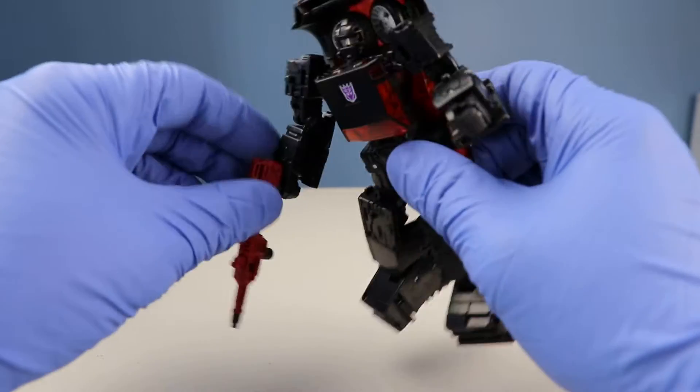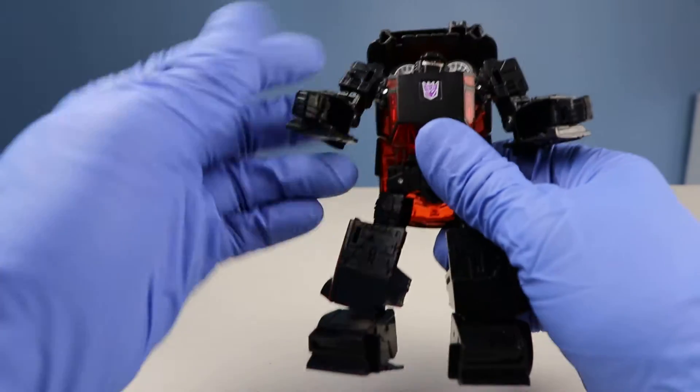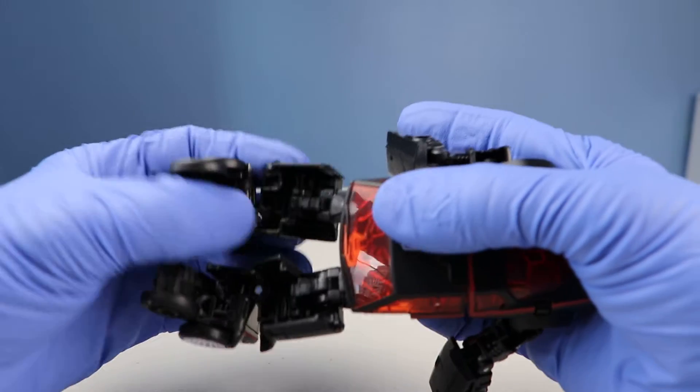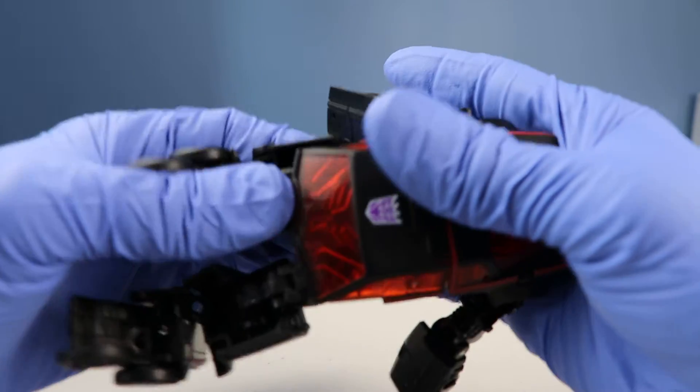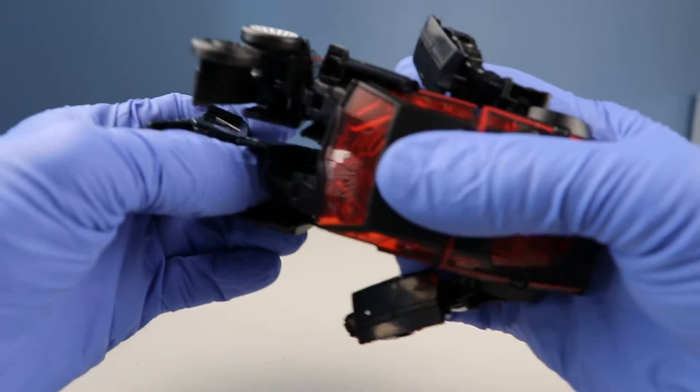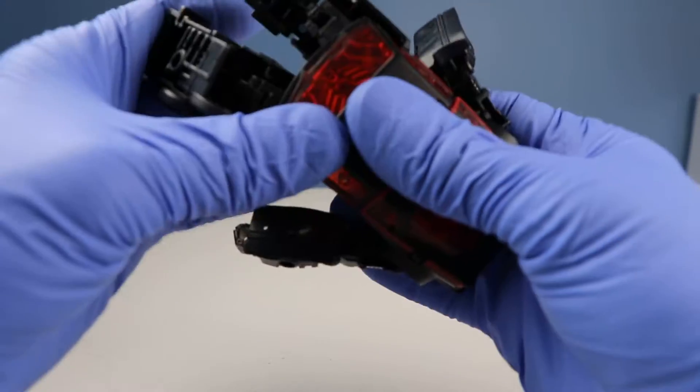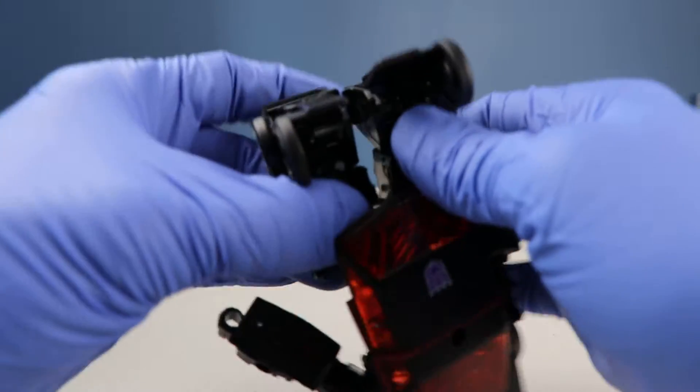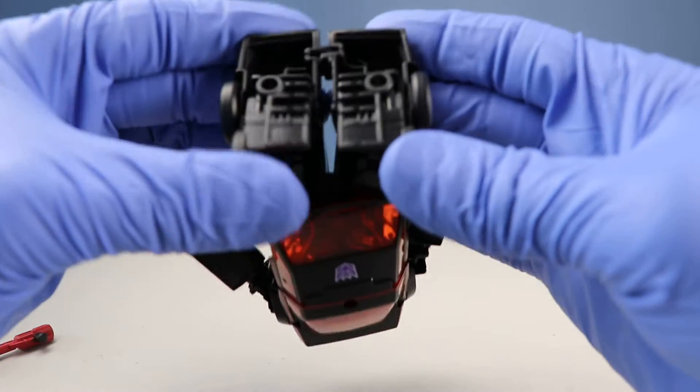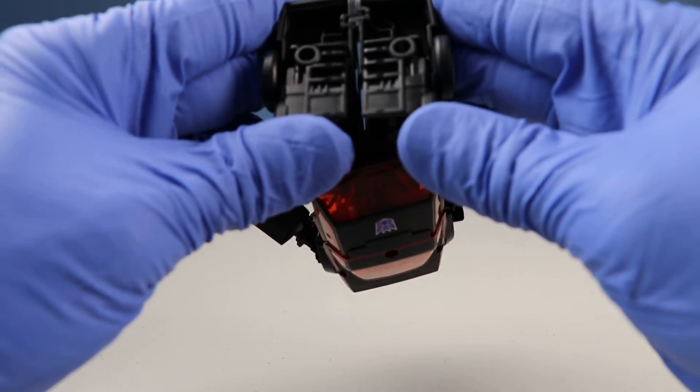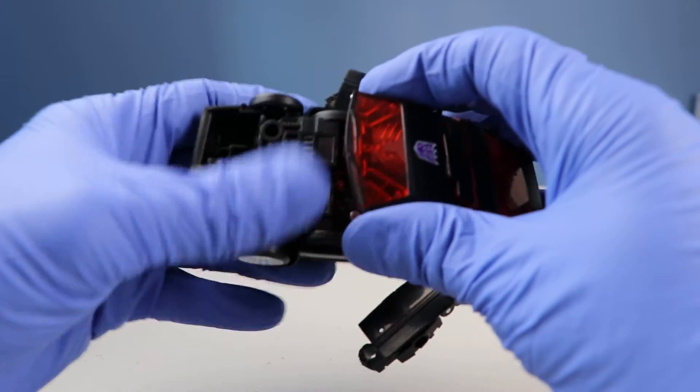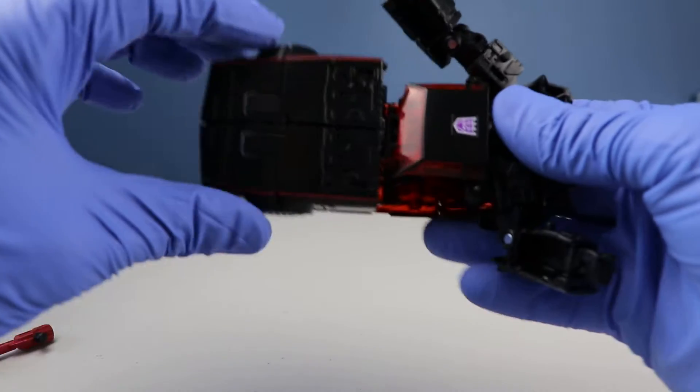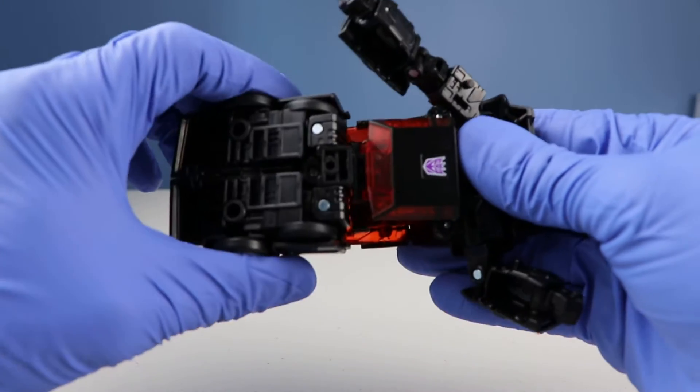So let's transform him. So first we'll start with the legs. He's got a double jointed leg. So fold that in and close it until they snap in and then join the feet together and then these fold back into the front of the car and then rotate it.